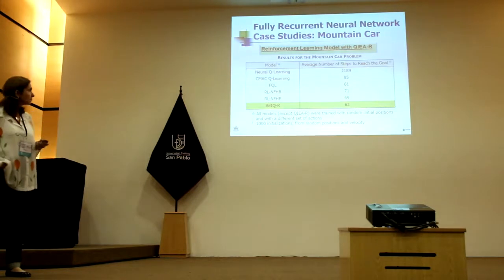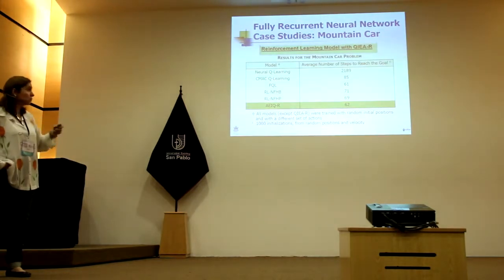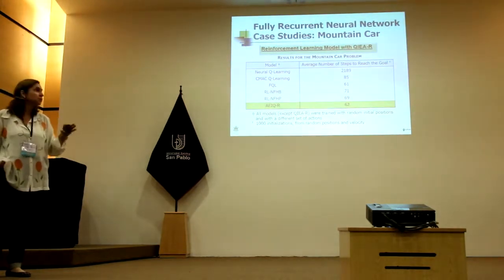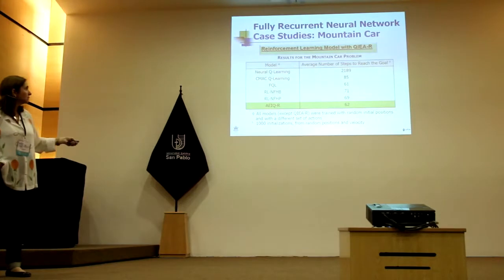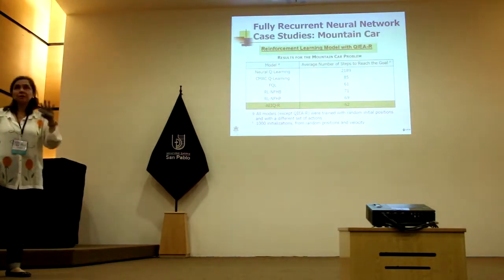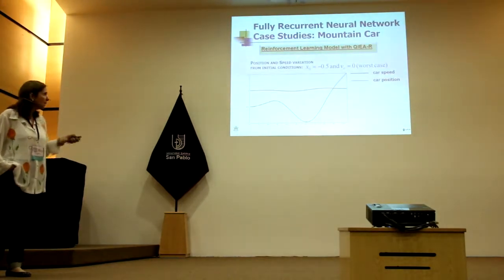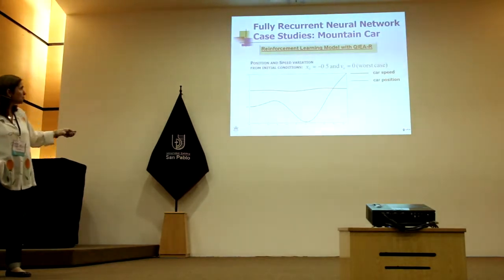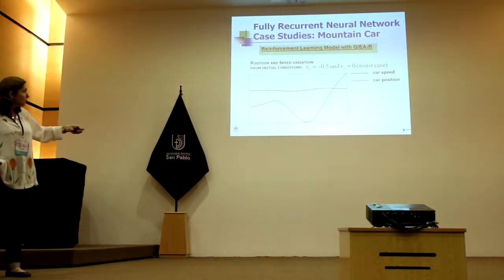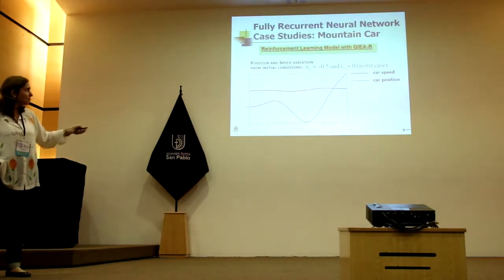The worst and the best positions. After that, testing used any position — a thousand initial positions, completely random. Here we show the velocity and car position in blue: it goes back and then it goes up.